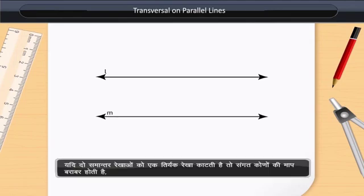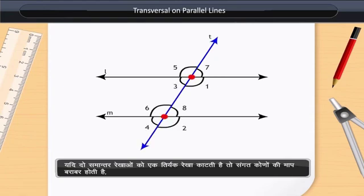If a transversal intersects two parallel lines, then the measures of the corresponding angles are equal.